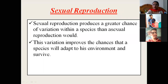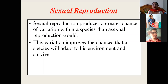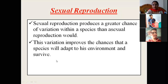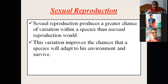Sexual reproduction produces a greater chance of variation within a species than asexual reproduction would. It creates genetic variation, producing a greater chance of variation within the species. This variation improves the chance that the species will adapt to its environment and survive. When genetic variation is created, plants will have different amounts of immunity and different adaptation capability to various environments.